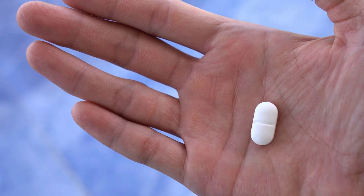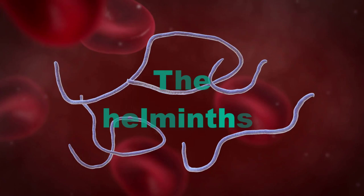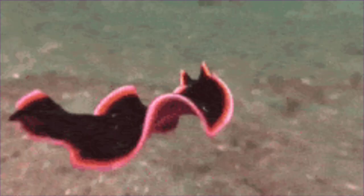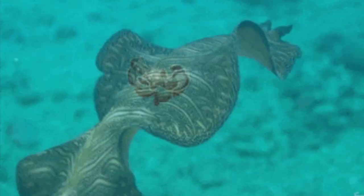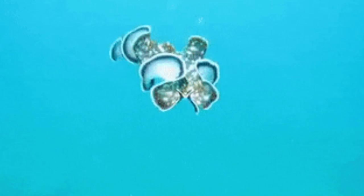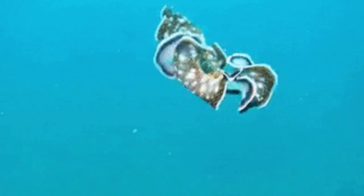The helminths are multicellular and are among the world's most common animal parasites. For example, 2 billion people — approximately 33% of the human population — are infected with the soil-transmitting helminths. There are two groups of parasitic helminths: the flatworms and the roundworms. Animals in the phylum Platyhelminthes, platy meaning flat and helminth meaning worm, are the flatworms. As multicellular animals, they have tissues functioning as organs in organ systems. However, they have no specialized respiratory or circulatory structures and lack a digestive tract.